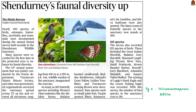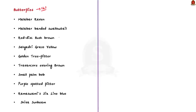The 12th annual faunal survey of Shendurney Wildlife Sanctuary was jointly conducted by the Forest Department, Travancore Nature History Society, and other NGOs, documenting nearly 450 species of birds, odonates, butterflies, arachnids, and mammals. As many as 165 butterfly species were documented including the Malabar raven, Malabar banded swallowtail, reddish bushbrown, Sahyadri grass yellow, golden tree flitter, and Travancore evening brown. Rare species such as small palm bob, purple spotted flitter, Rama Swami's six-line blue, and Shiva sunbeam were also spotted.